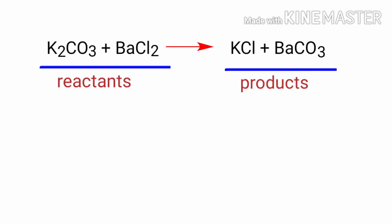In this equation, the reactants are potassium carbonate and barium chloride, and the products are potassium chloride and barium carbonate.